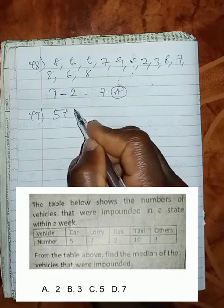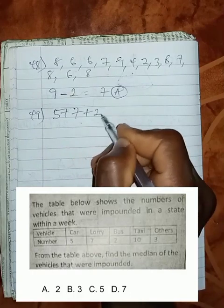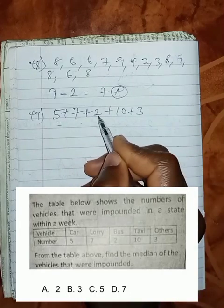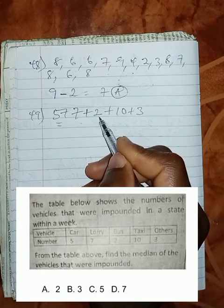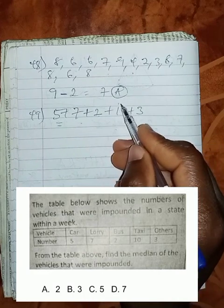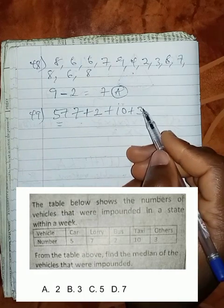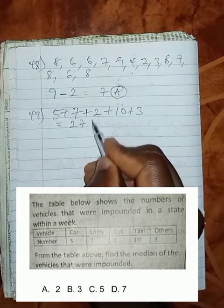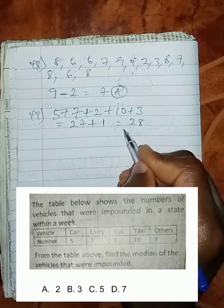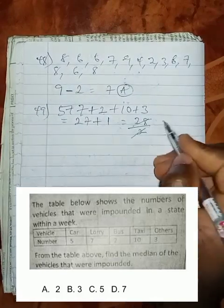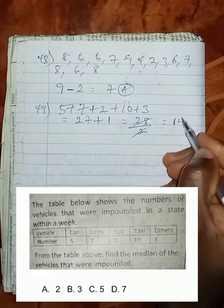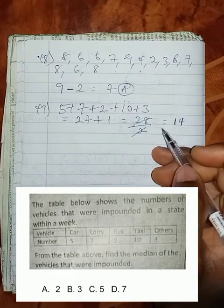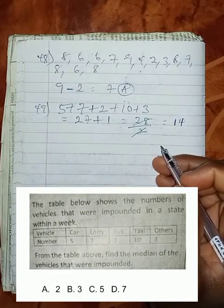We want to get the median of this frequency table. That would be 5 plus 7 plus 2 plus 10 plus 3. 5 plus 7 is 12 plus 2 is 14. 14 plus 10 will be 24. 24 plus 3 will be 27. Because we have an odd number, let us add 1. Then we have 28. Now let's divide this by 2. If we divide this by 2, we get 14.